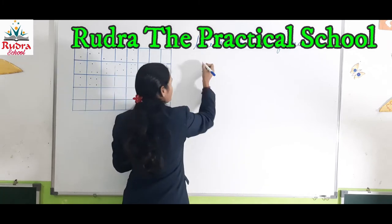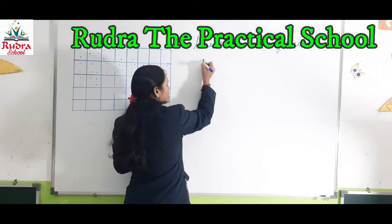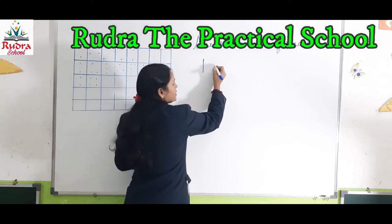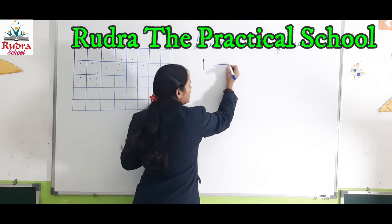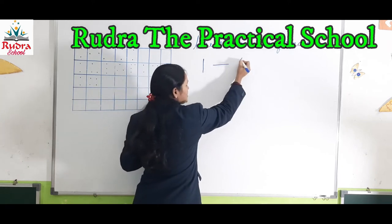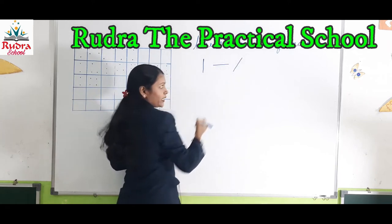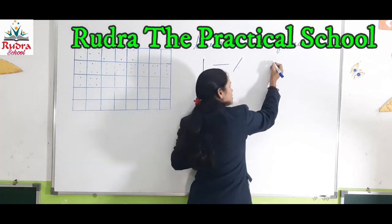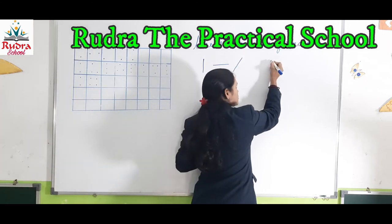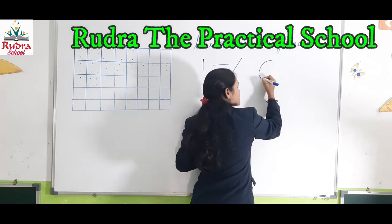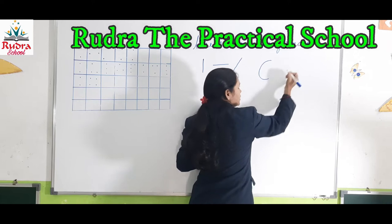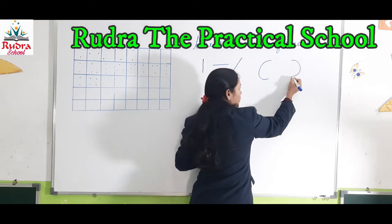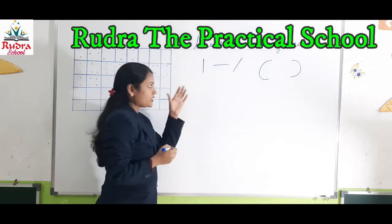Now look at the line strokes. This is a standing line, this is a sleeping line, and this is a slanting line. These are line strokes. Now look at the curvy strokes — this is a left curve and this is a right curve.